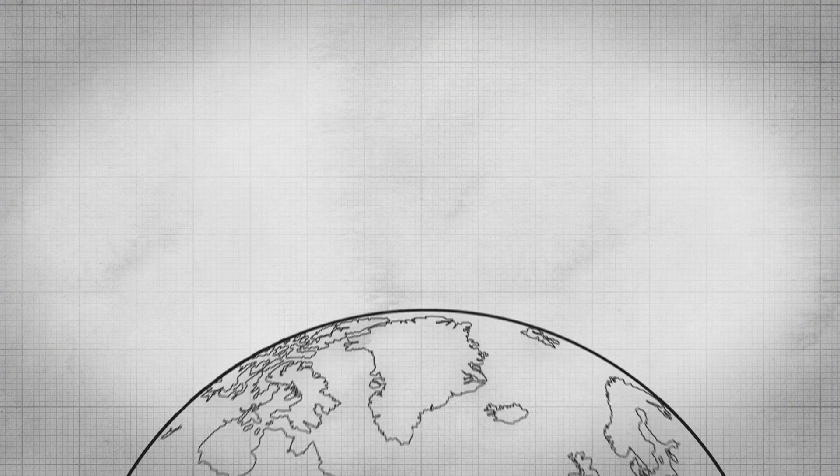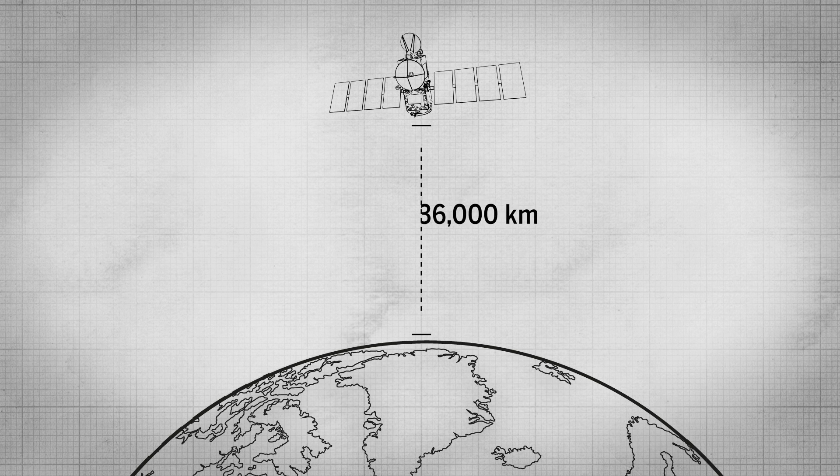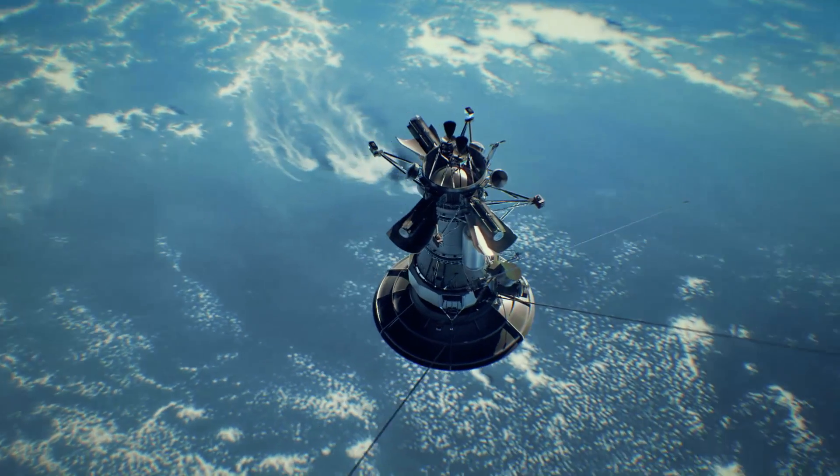To get a satellite to hover over the same spot on Earth, geostationary orbit, you have to be 36,000 kilometers away, too far to use some sensors, like radar.